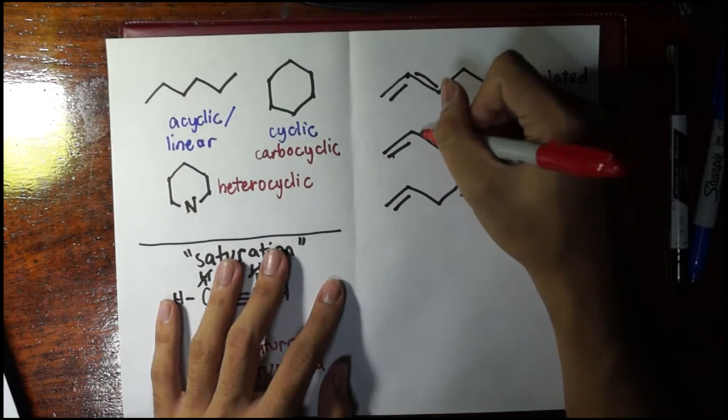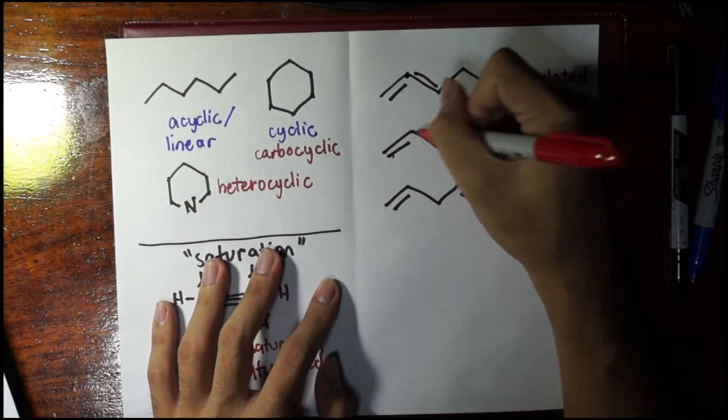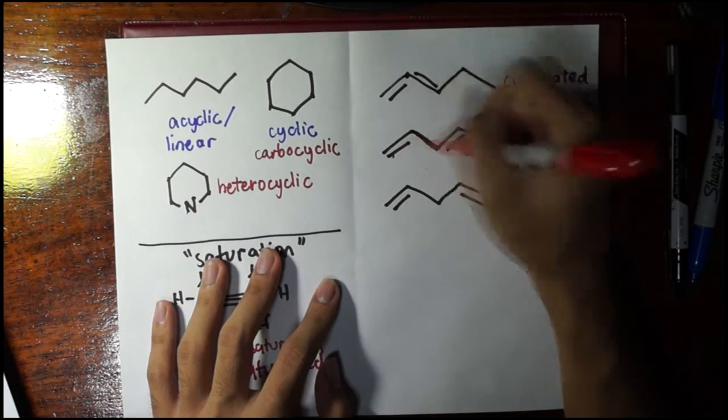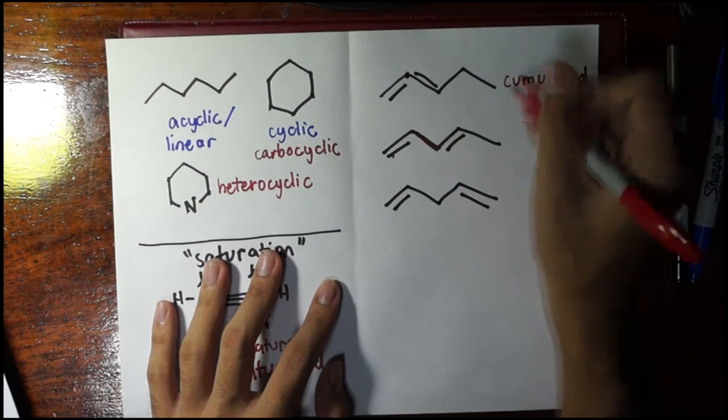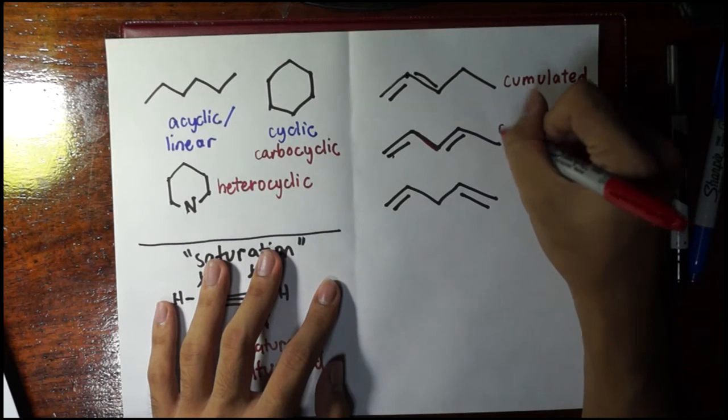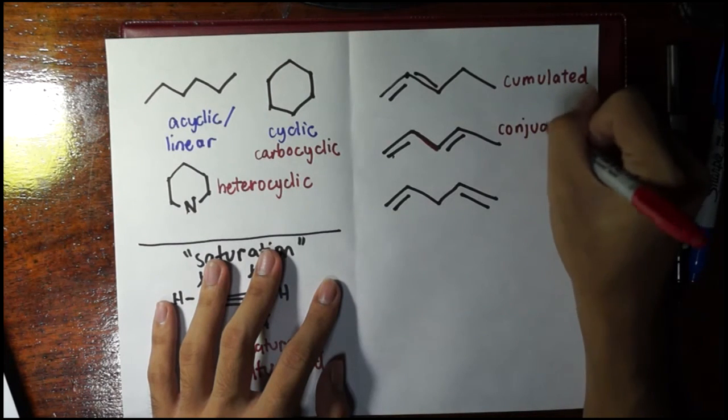Here, there is a distance of one single bond. This is the single bond between these two double bonds. If all the double bonds are separated by a single bond each, this is considered as conjugated.